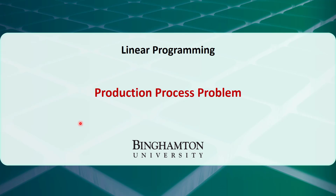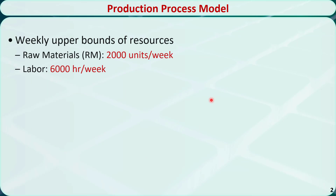In this video, I will talk about how to formulate a type of linear programming problem called the production process problem. Let's see an example. A company uses raw material, RM, and labor to produce four types of products.